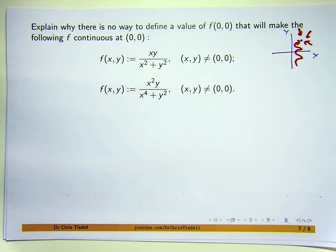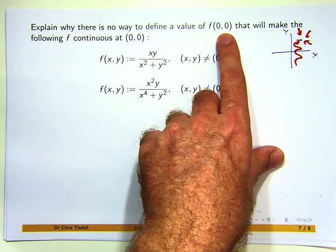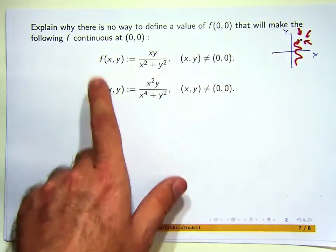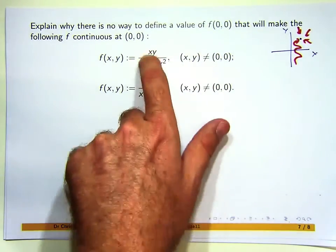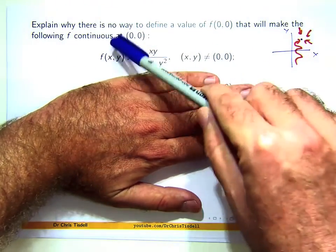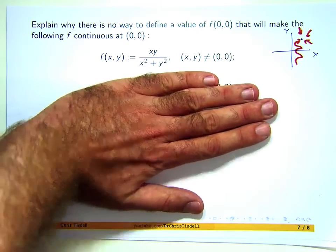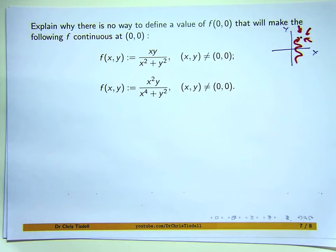We're asked to show that there is no way to define the value of f at (0,0) to make the following functions continuous at zero. We have two definitions of f and we'll treat them separately. The function isn't defined at (0,0), and what the question asks is to show that you can't give f a value at (0,0) to make it continuous.